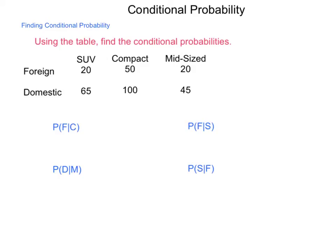Here we have types of vehicles found in a parking lot — SUV, compact, or mid-sized — and the classification of these vehicles, whether they are foreign or domestic. The information in each individual section is determined by the cross of those two categories. The items here are compact cars of foreign make, and these are domestic mid-sized cars. All items in the SUV column total 85, and all items in the foreign row total 90, broken up into three different categories.